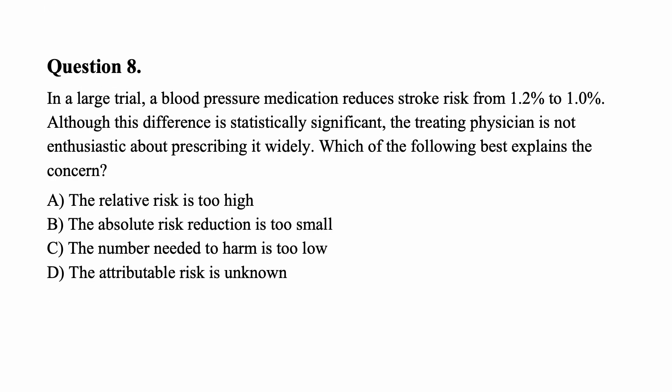Question eight: A blood pressure medication reduces stroke risk from 1.2% to 1%. Although this difference is statistically significant, the treating physician is not enthusiastic about prescribing it widely. Which explains the concern? Even though it's statistically significant, the absolute risk reduction is very small — going from 1.2% to 1% is only a 0.2% absolute difference. The answer is B: the absolute risk reduction is too small.